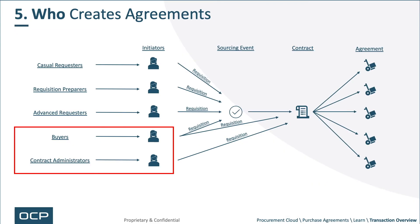Who creates agreements? There's indirect and direct. Indirectly, requesters create agreements — they don't actually create the agreement, but they often create the requisition that indirectly triggers agreement creation. Buyers and contract administrators, depending on security, will most often have the responsibility and access to create agreements manually, as well as through contracts and sourcing events.